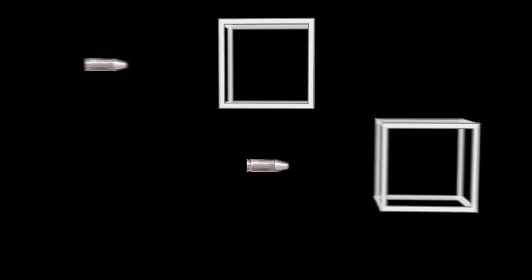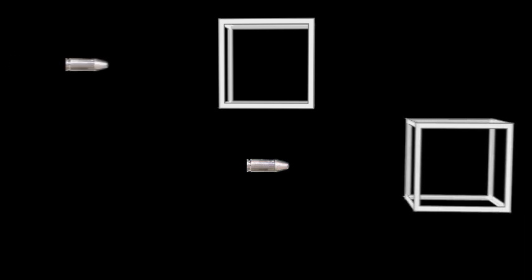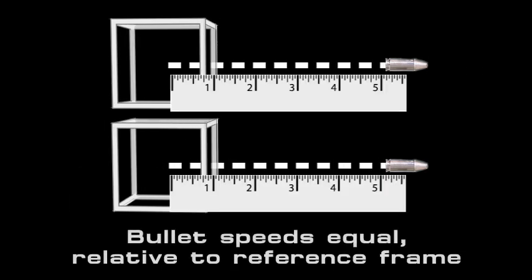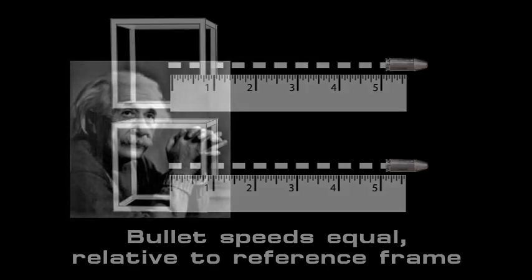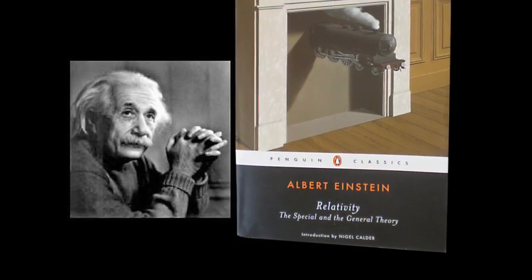Steady motion cannot be described in absolute terms. It always must be described relative to some frame of reference. This is a core principle of Albert Einstein's relativity, and it's an unchallenged fact in physics.